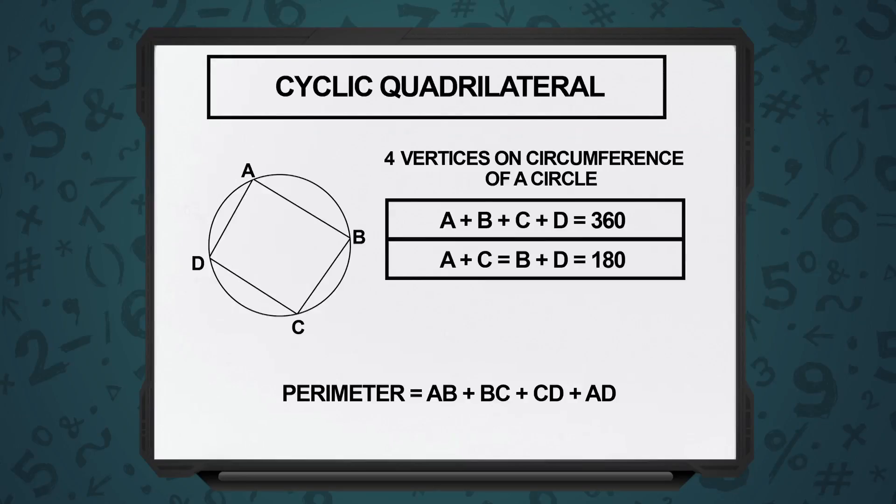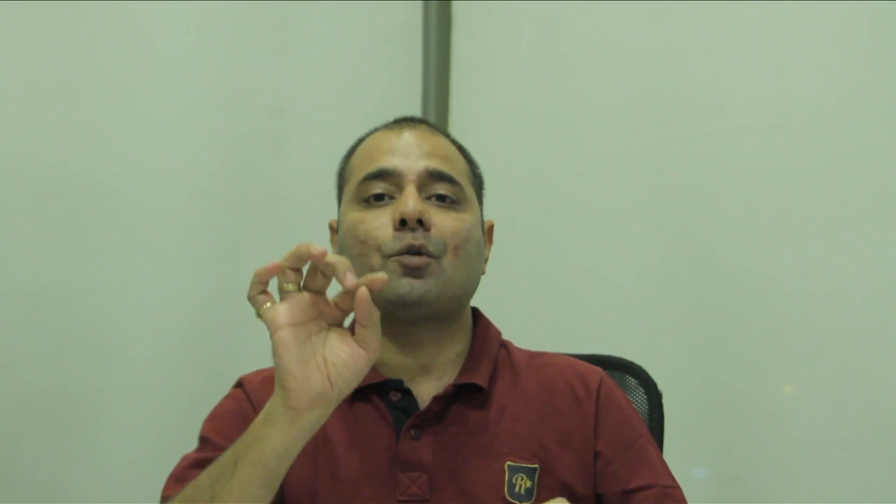Now, in a cyclic quadrilateral, as the name suggests, cyclic, the four vertices of the quadrilateral, the four endpoints, they lie exactly on the circumference of a circle. So, you have this quadrilateral and the four vertices will fit exactly on the circumference of a circle.